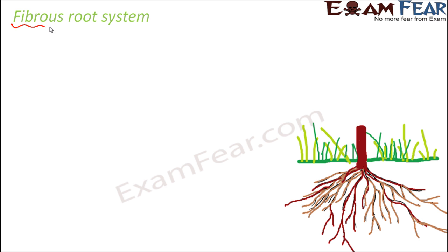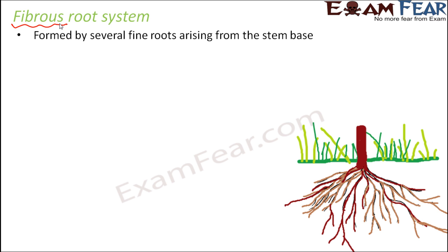Now talking about fibrous root system — the word 'fibrous' is derived from 'fiber.' When you think of fibers, they are thin, hair-like or thread-like structures, and the name itself defines this root system. A fibrous root system is formed by several fine roots arising from the stem base. Here you have several thread-like roots arising all around the base of the stem, and from those structures even thinner structures emerge.